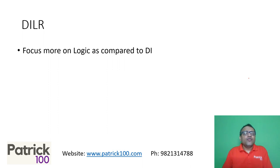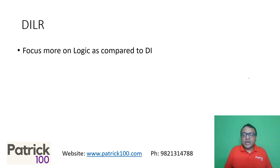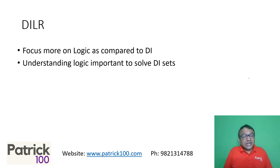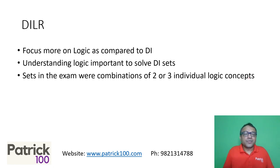Coming to DLR — focus more on logic as compared to data interpretation. In the examination, it was more logic questions compared to data interpretation. There was a time when DI and logic had similar numbers of questions, but in recent past, logic has become more dominant compared to DI. Even the DI sets have logic in them. Understanding logic becomes important to solve normal DI sets. Looking at recent past papers, that has been the case — not too many pure DI sets, more logic than DI. CAC 21 had slightly more weightage for DI compared to recent past papers, but logic was still a major part.